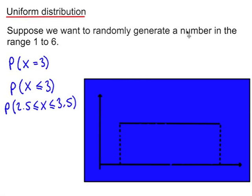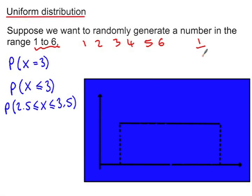Suppose we want to randomly generate a number in the range 1 to 6. If we were only considering whole numbers — 1, 2, 3, 4, 5, or 6 — we would say that each number has a probability of 1 in 6 of being chosen, such as a six-sided die.